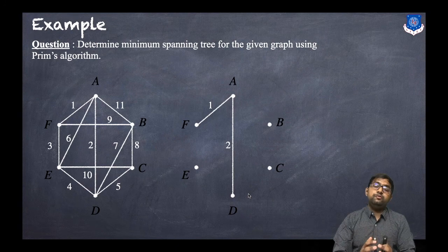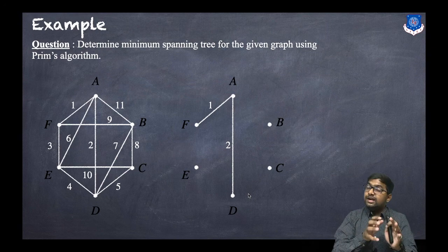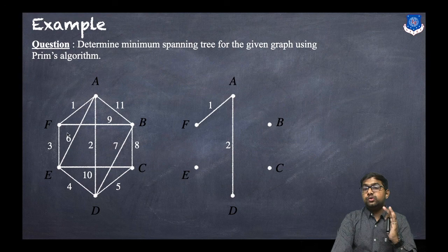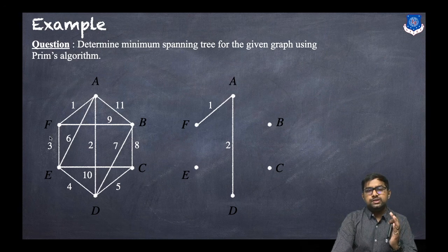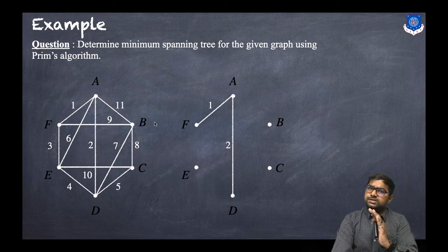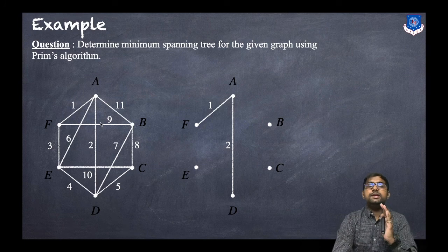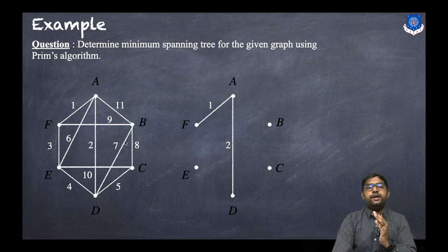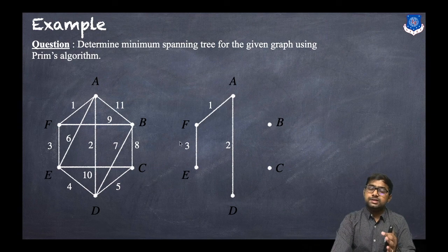For the third step, we consider all adjacent edges of vertices F, A, and D. For F: weights 3 and 9. For A: weights 6 and 11. For D: weights 4, 5, and 7. The minimum is 3, so we select the edge with weight 3 and add the corresponding vertex E.